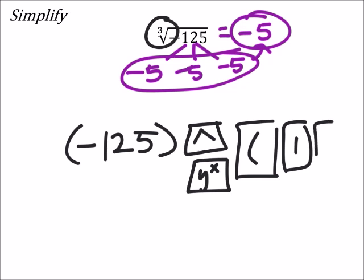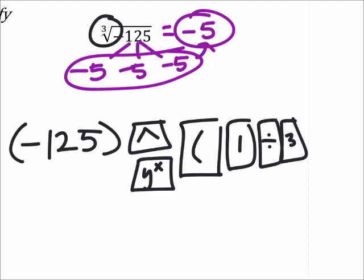You're going to need a parenthesis, then you're going to need a 1, you're going to divide it by 3, and then you're going to need another parenthesis, and then you can push enter or equals.